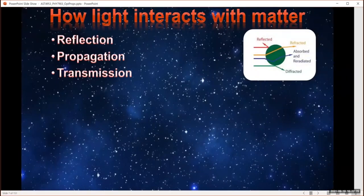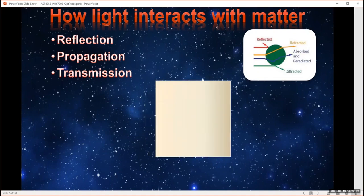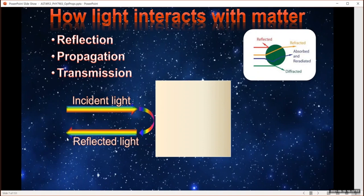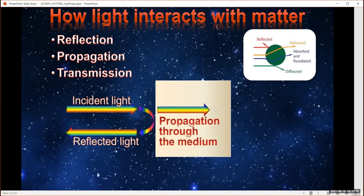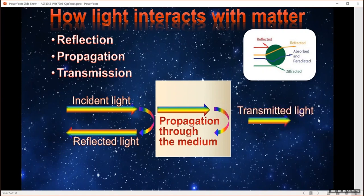We can classify all of these things into general properties: reflection of light, propagation of light, and transmission of light. Using a slab model — incident light hits the slab, some is reflected, some goes into the material and propagates through, there may or may not be a reflection at the other side, and some light comes out the other side. So we have reflection, transmission, and propagation through.